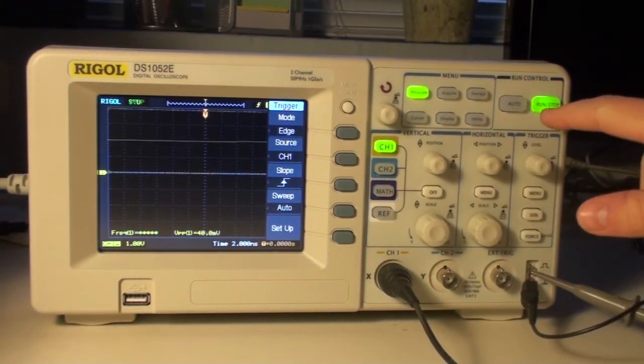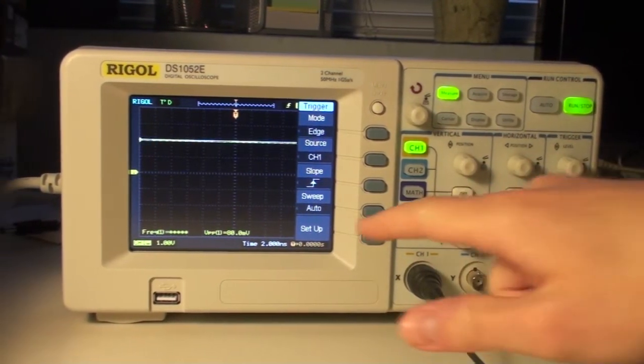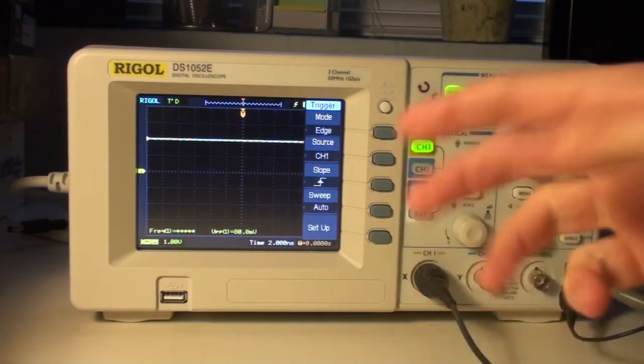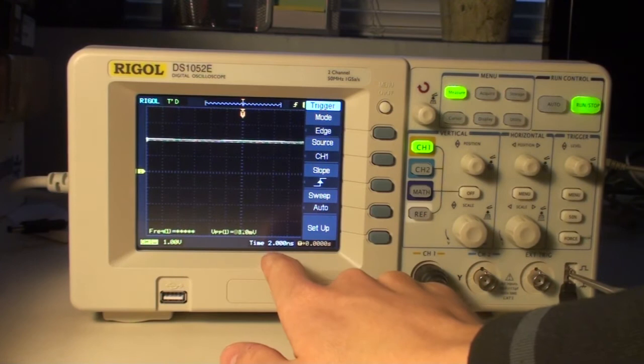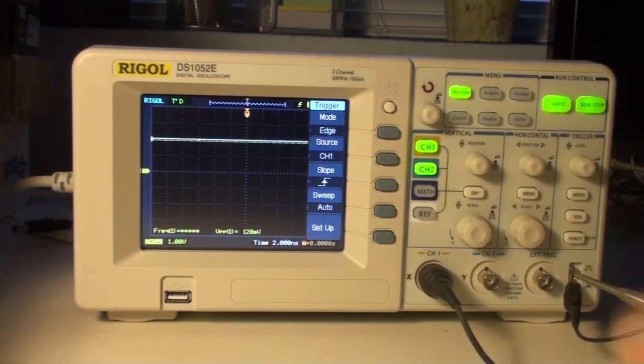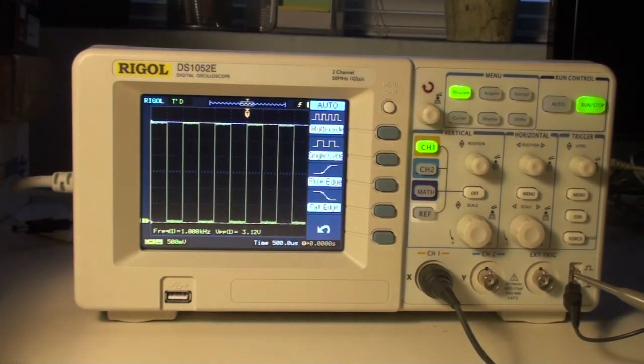Then I click run and we'll see the current frequency. For now it is in 2 nanoseconds, so we can't see it, so we click auto and it automatically changes the view.